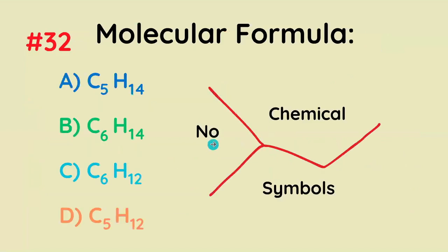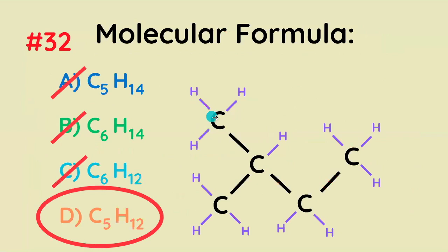What's the molecular formula of this molecule? All the ends and bends are carbons, and they each need four bonds. Anything that's not a carbon-carbon bond is a bond with hydrogen. So it's C₅H₁₂.